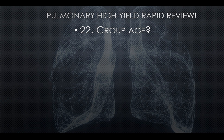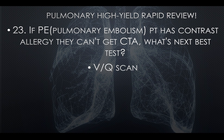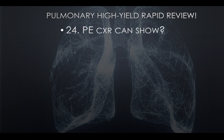Question twenty-one: Croup age. Knowing age of presentation helps narrow answers. Croup appears in children six months to three years old. Question twenty-two: If a pulmonary embolism patient has a contrast allergy and cannot get a CTA, the next best test is a VQ scan. VQ scan is preferred over CTA when a patient has contrast allergy or is pregnant.